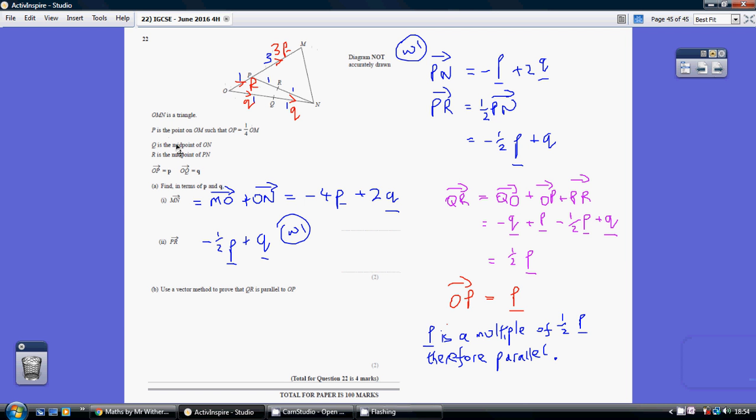We're also told that Q is the midpoint of ON, so if that's 1, that's 1. And R is the midpoint of PN, so if that's 1, that's 1. Those bits in blue.